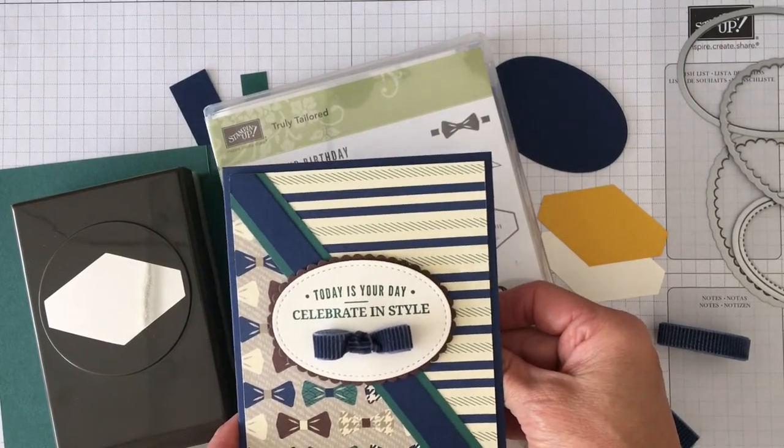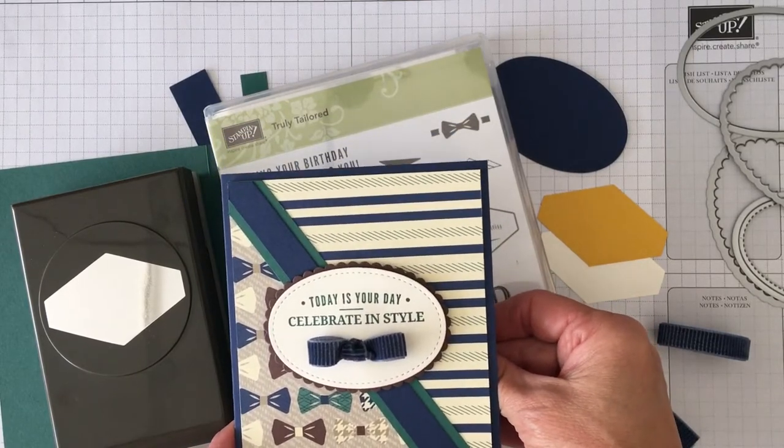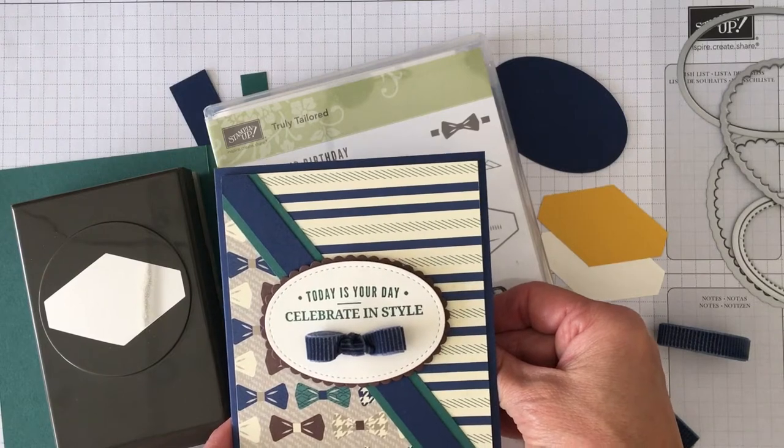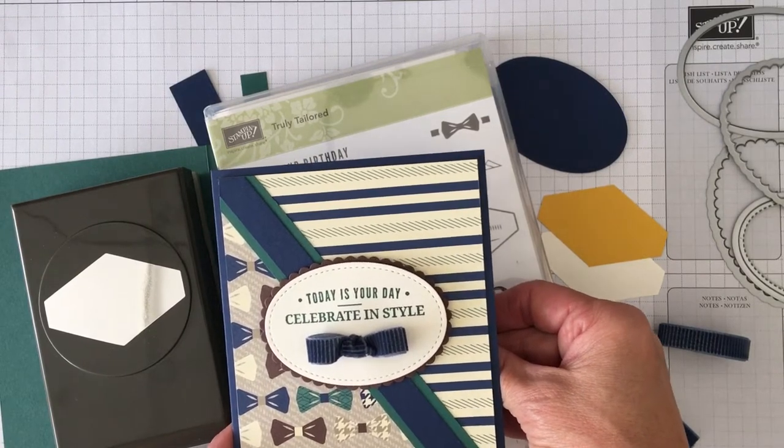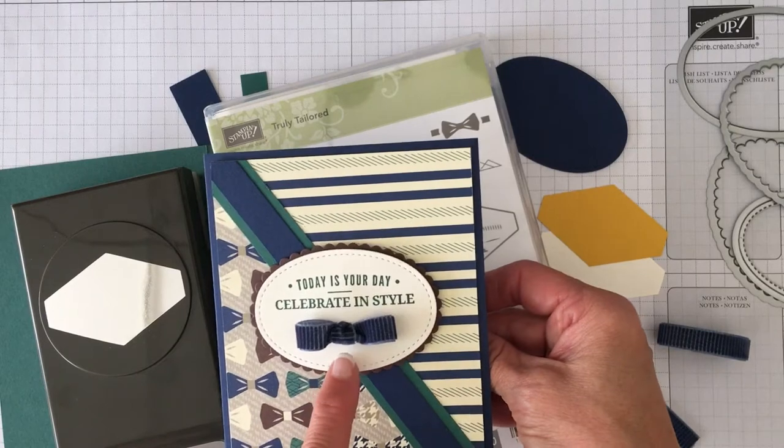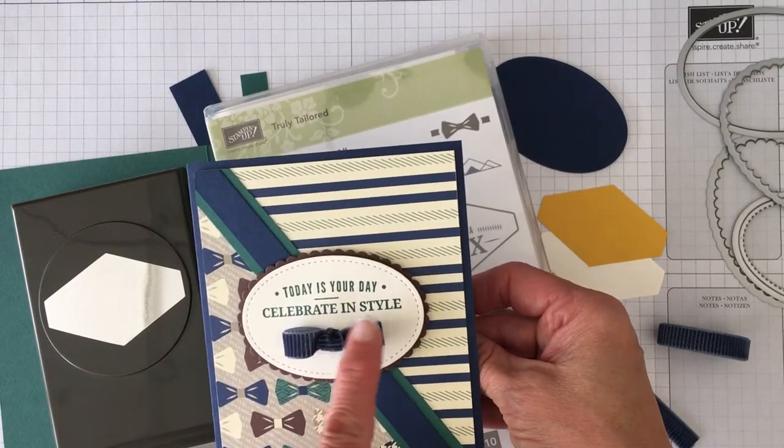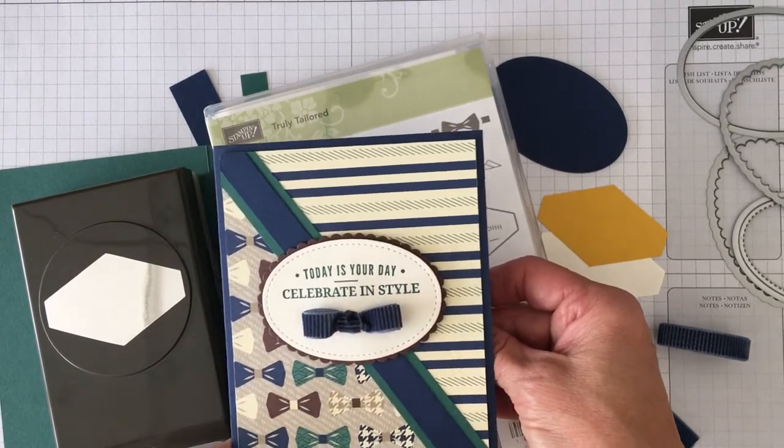Today I'd like to show you this masculine birthday card I made using the Truly Tailored Bundle and the True Gentleman Designer Series Paper found in the Occasions Catalog. It also has this cute little bow on it made out of the corduroy ribbon that's also in the Occasions Catalog.